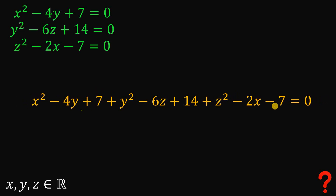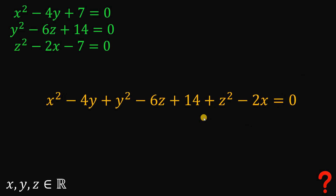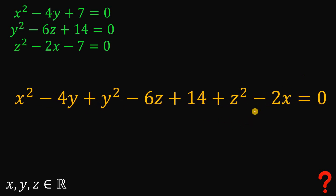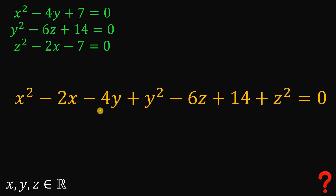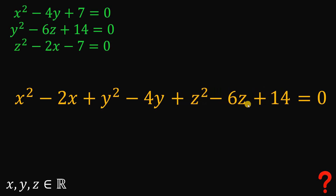Observe that we have positive 7 and negative 7 — those cancel to 0. Now let's focus on the remaining expression. We can place the negative 2x beside x squared, the negative 4y beside y squared, and the negative 6z beside z squared.